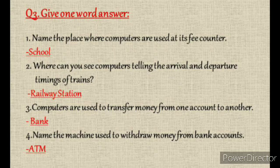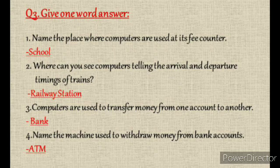Where can you see computers telling the arrival and departure timing of trains? The answer is railway station. Computers are used to transfer money from one account to another. The answer is bank.